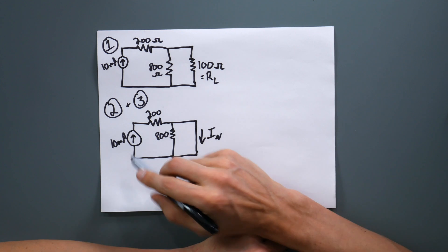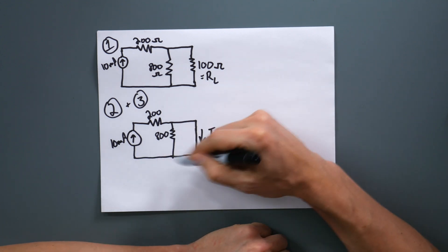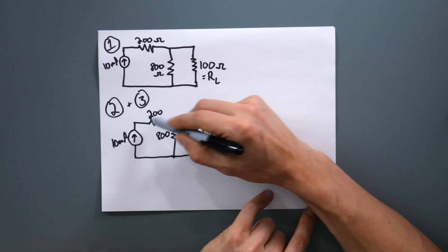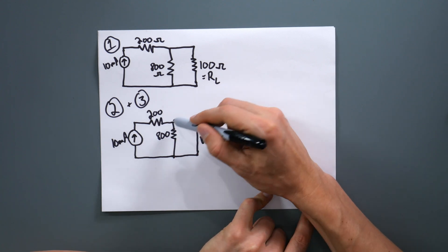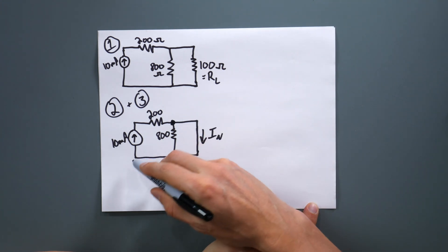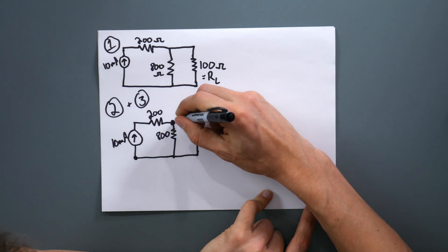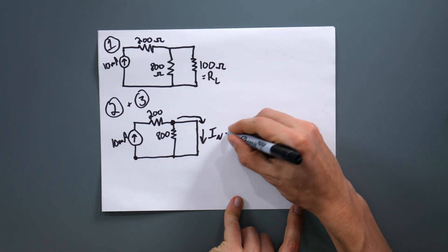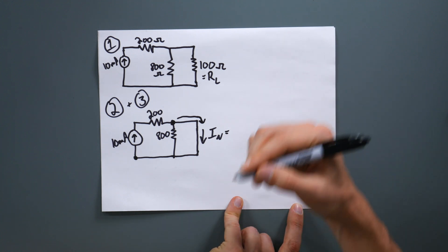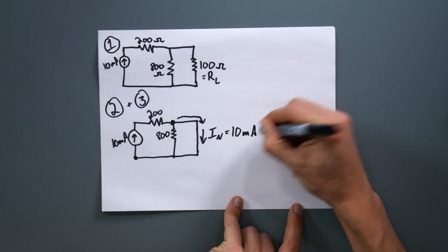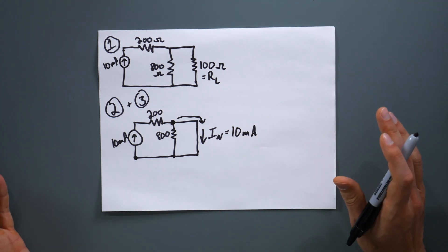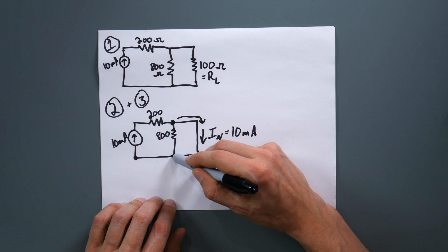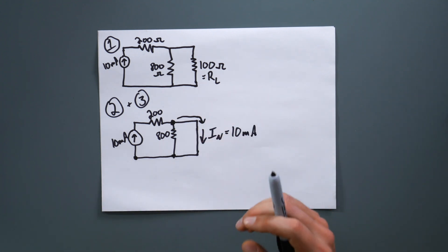This is a 10 milliamp current source, so this change in resistance isn't going to change how much current is flowing through those 200 ohms — we have 10 milliamps flowing through the 200 ohms. And this node right here is the same as this node right here, so we are expecting that current in its entirety to flow down this direction. Just by inspection, our Norton equivalent current is going to be 10 milliamps. We're basically bypassing that 800 ohms because both sides of that resistor are connected together.